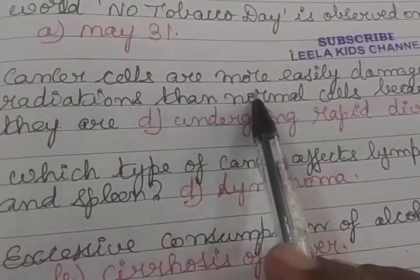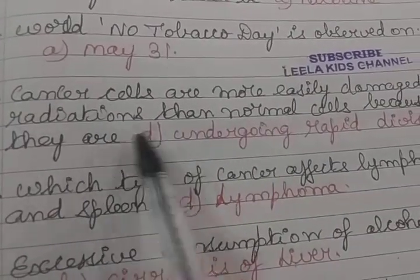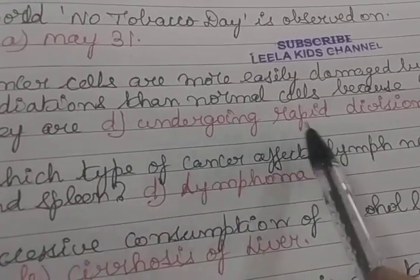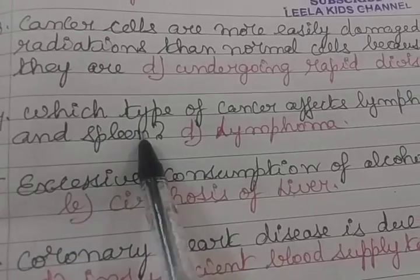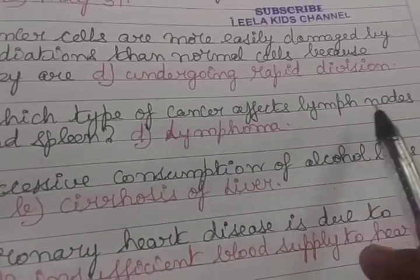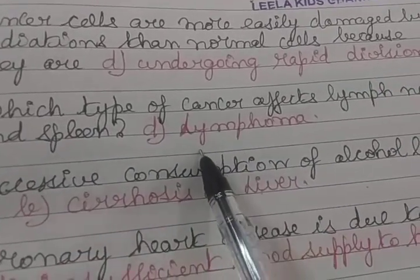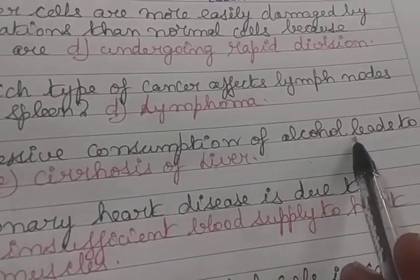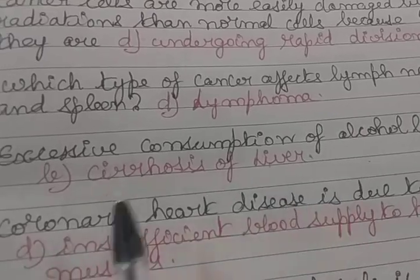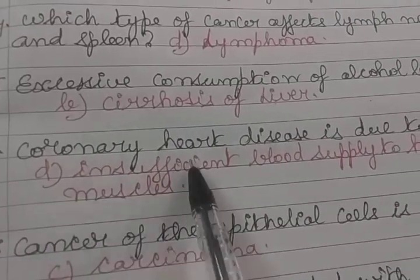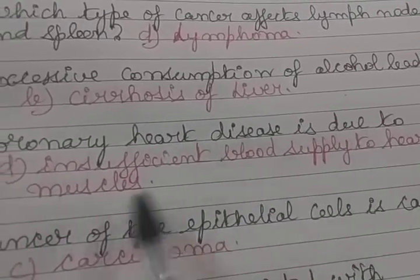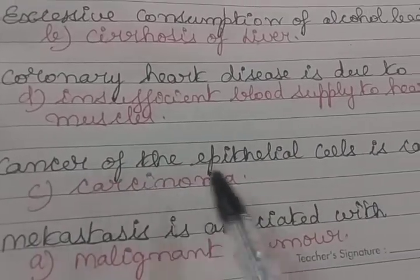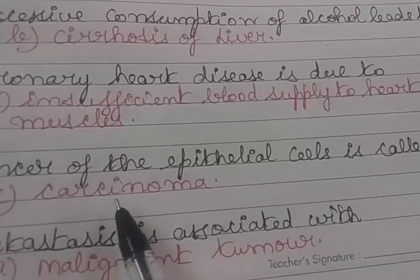Cancer cells are more easily damaged by radiations than normal cells because they are undergoing rapid division. Which type of cancer affects lymph nodes and spleen? Lymphoma. Excessive consumption of alcohol leads to cirrhosis of liver. Coronary heart disease is due to insufficient blood supply to heart muscles. Cancer of the epithelial cells is called carcinoma.